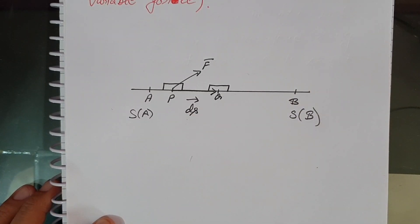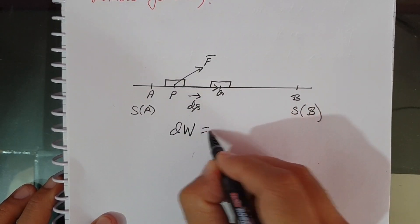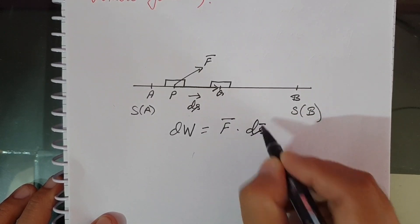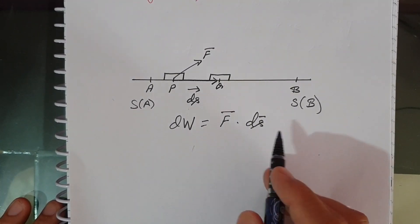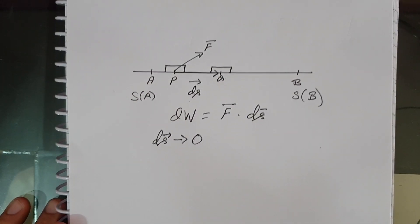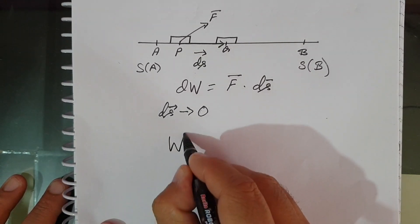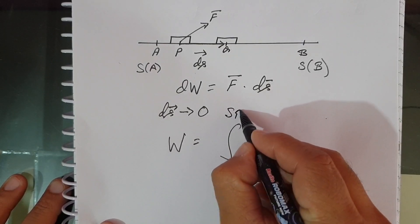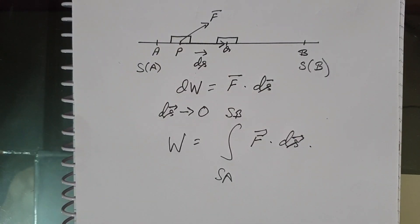A small amount of work done in moving the body from P to Q is given by dW, which equals F dot ds. As ds tends to 0 — it is tending to 0, but it is not equal to 0. The total work done in moving the body from A to B can be obtained by integrating this expression between S_A and S_B, so W equals the integral from A to B of F dot ds.